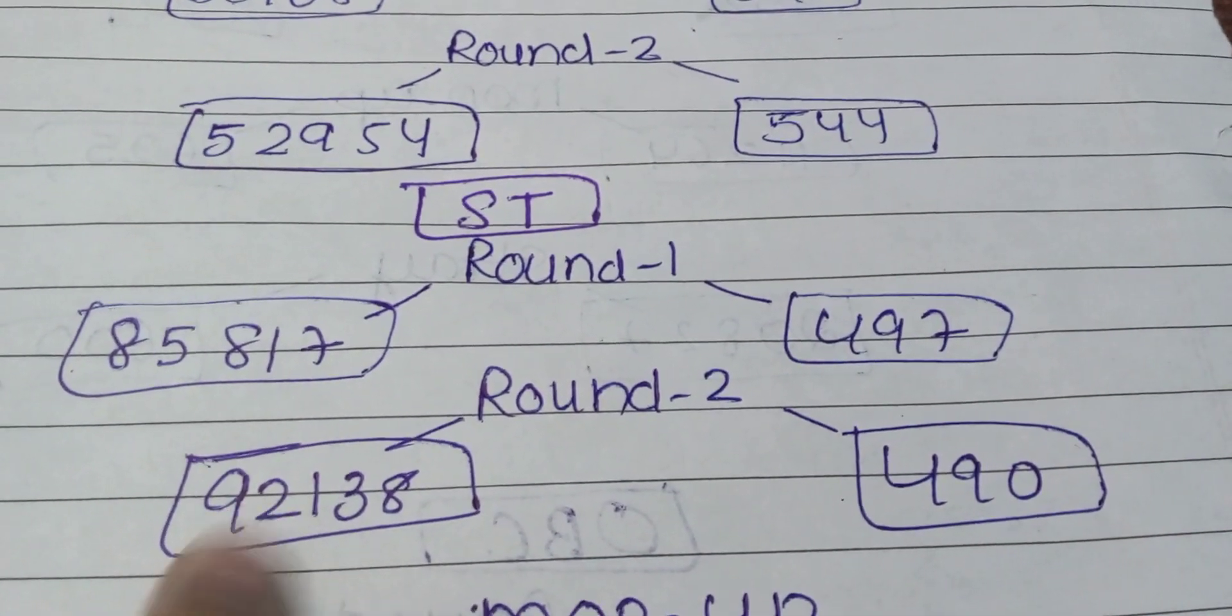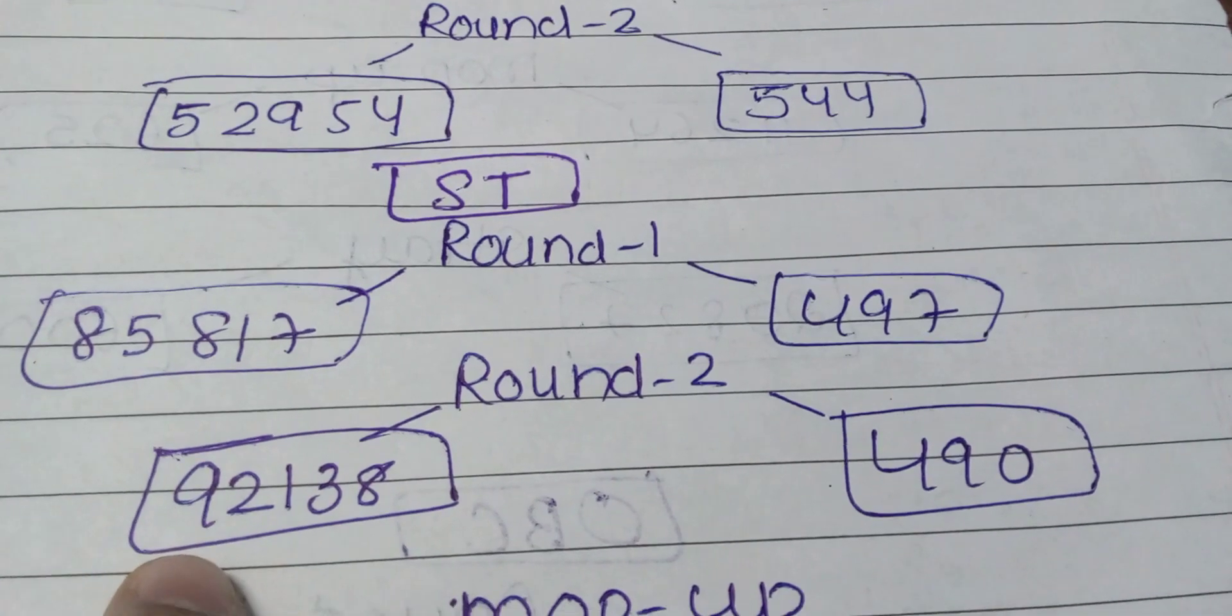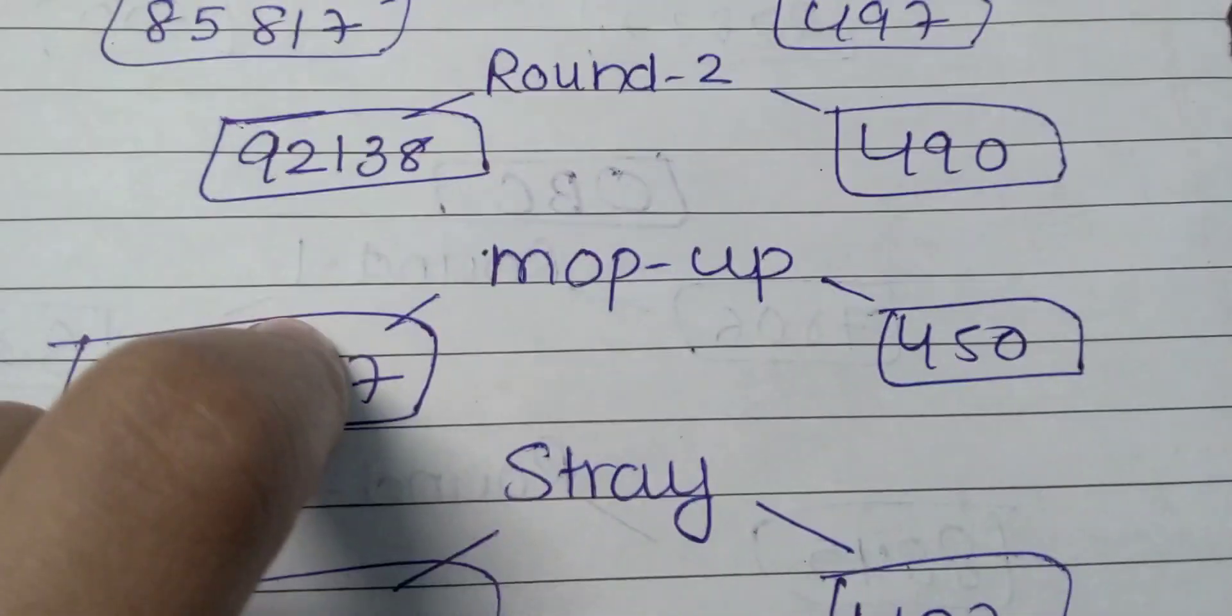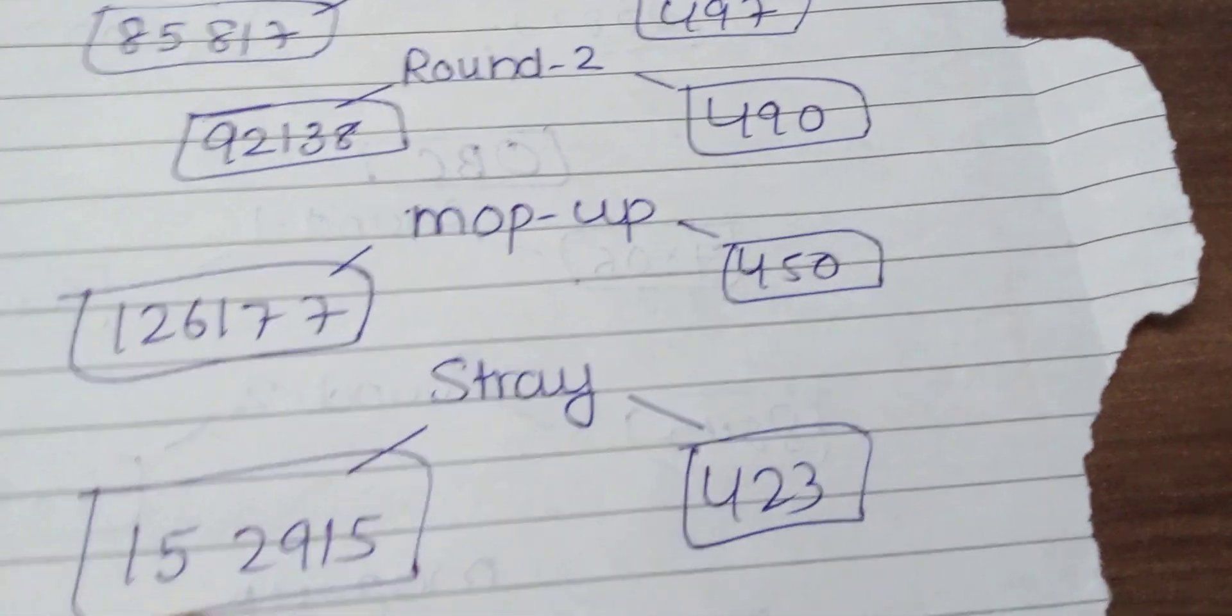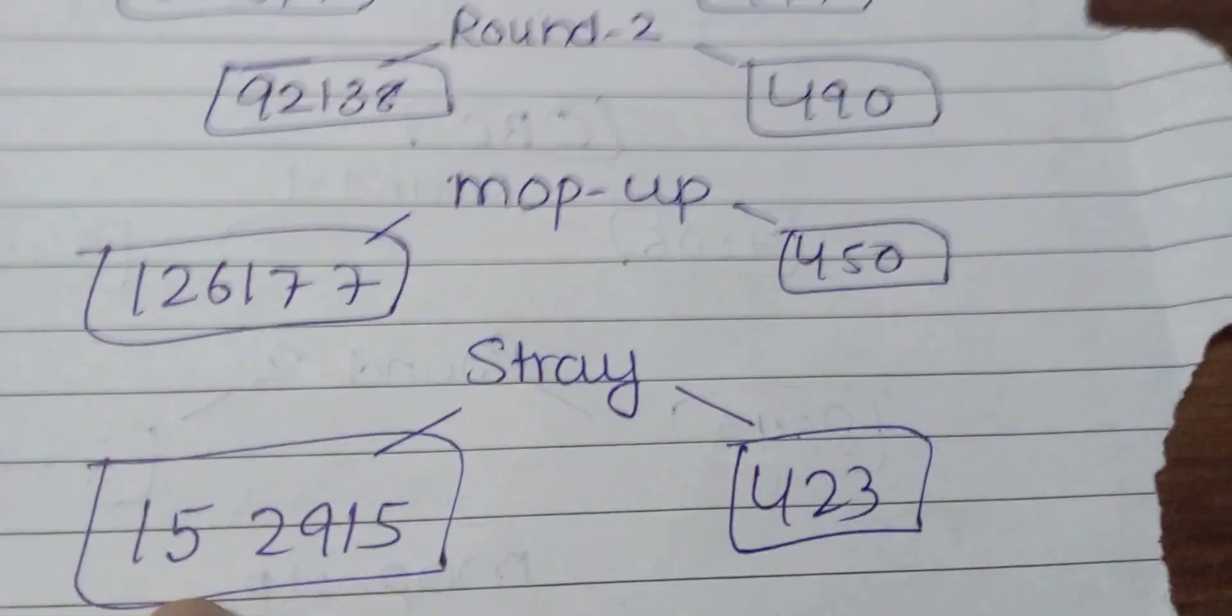Round 2 was 490 marks and 92138 rank. Mop-up 450 marks and 126177 rank. Stray 423 marks and 152915 rank.